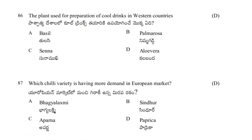The plant used for the preparation of cool drinks in western countries is: basil palm, roses, sinnabar, or aloe vera. The answer is aloe vera.